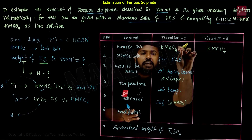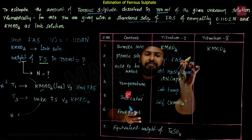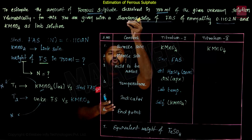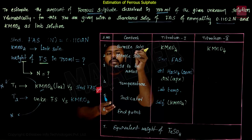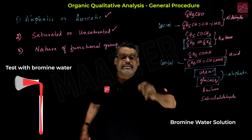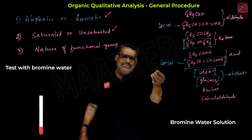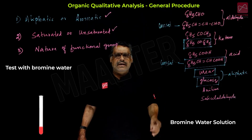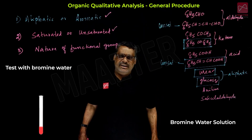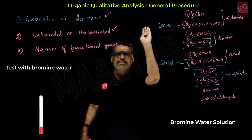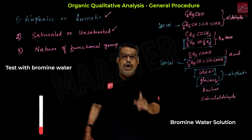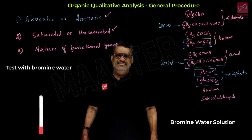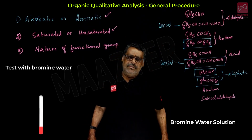For Chemistry, there are two parts. Volumetric analysis: short procedure 2.5 marks, T1 tabular column 2 marks, T2 tabular column 2 marks, normality calculation 2 marks, and result 0.5 marks — total 9 marks. Organic compound analysis: preliminary test 2 marks, aliphatic or aromatic test 1 mark, saturation or unsaturation test 1 mark, functional group test 1 mark, and result 1 mark — total 6 marks. Volumetric analysis plus organic compound analysis: 9 + 6 = 15 marks.